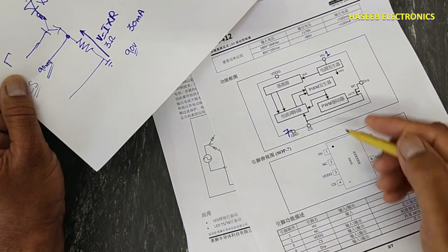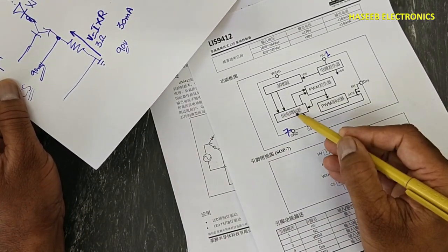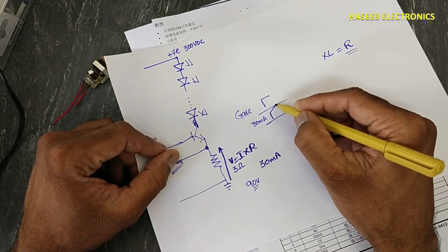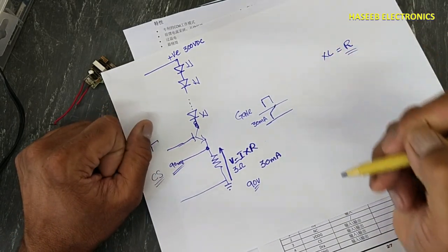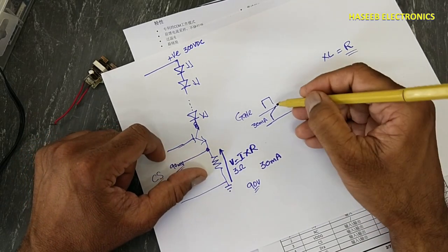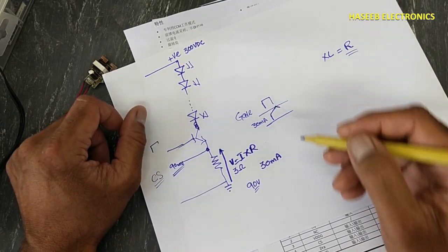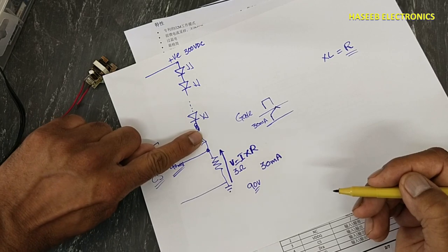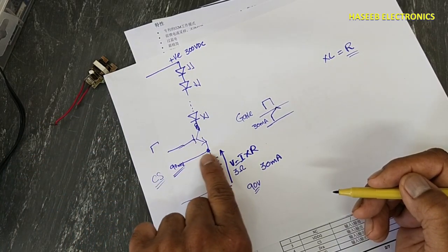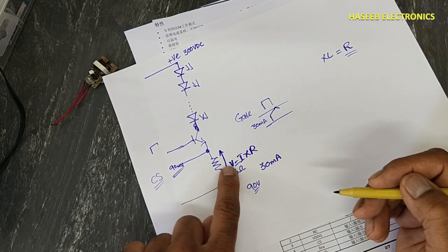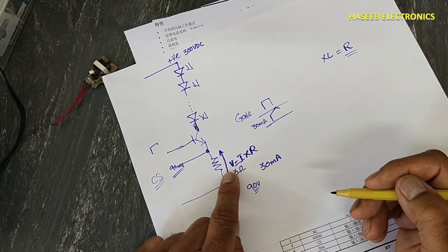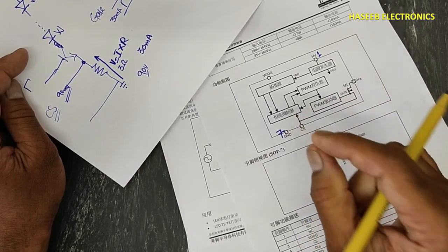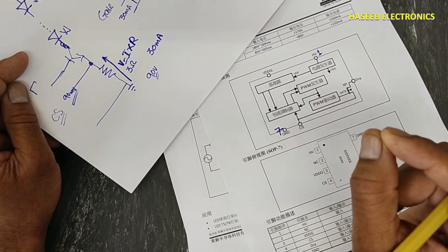This peak current depends on the size of the LED, power rating, and configuration — series or series-parallel. This current causes a voltage drop across the resistor, which reaches the current sense pin. The current sense modulator modulates the signal that the current has reached its threshold, and immediately it turns off the gate drive. When the gate drive turns off, the MOSFET opens and the current decreases.